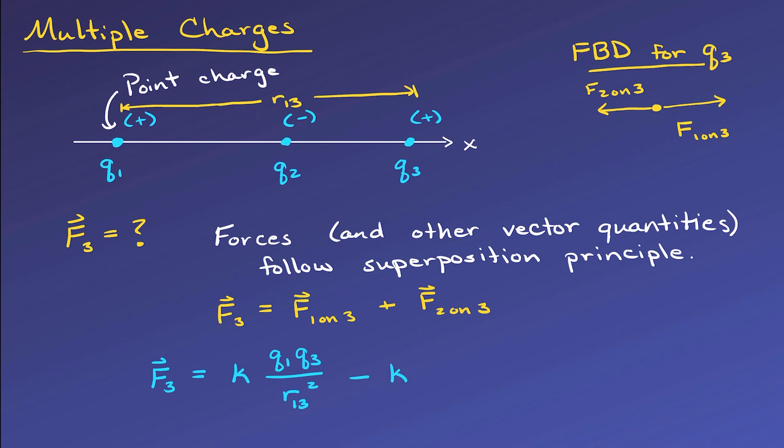Then F2 on 3 will be negative, since it's in the minus x direction, and our two charges will be q2 and q3. Now if we were given the values of each charge and the distances, we could calculate this force.